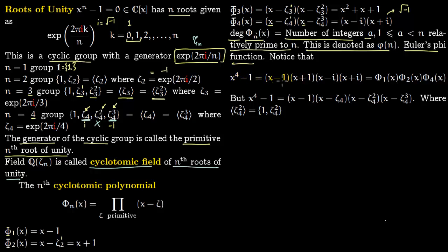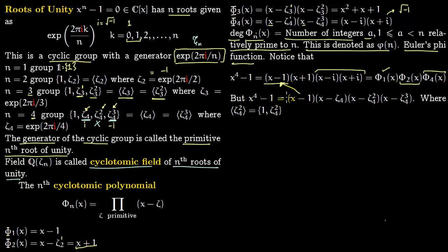Consider the factorization of x⁴ - 1: it factors as (x-1)(x+1)(x-i)(x+i). You can identify: (x-1) is φ₁(x), the factor (x-i)(x+i) is φ₄(x), and (x+1) is φ₂(x). The roots are {1, ζ₄, ζ₄², ζ₄³}. The roots whose powers are relatively prime to 4 — powers 1 and 3 — go into φ₄, and x-1 corresponds to φ₁.